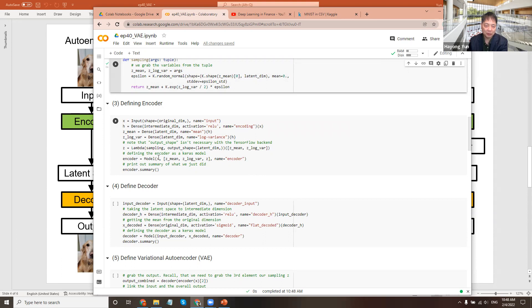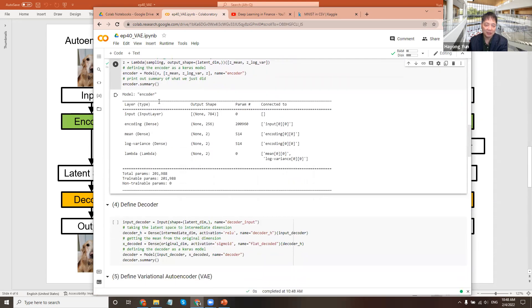So the encoder, what it will take is input x, and it will give out the z mean, z log variance, and z. We call that as output. So output comes in three numbers basically. That's the difference between autoencoder and variational autoencoder.